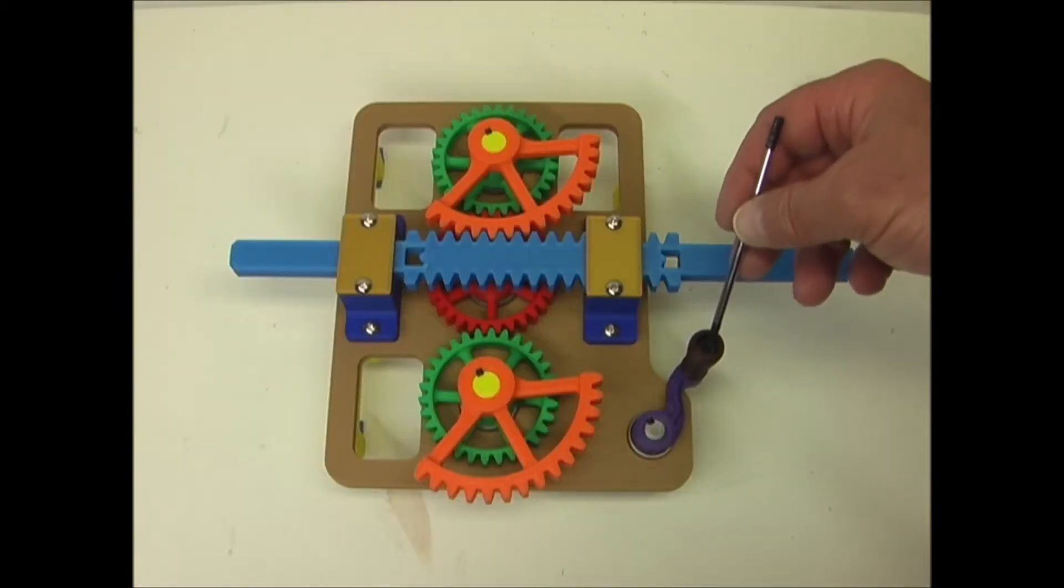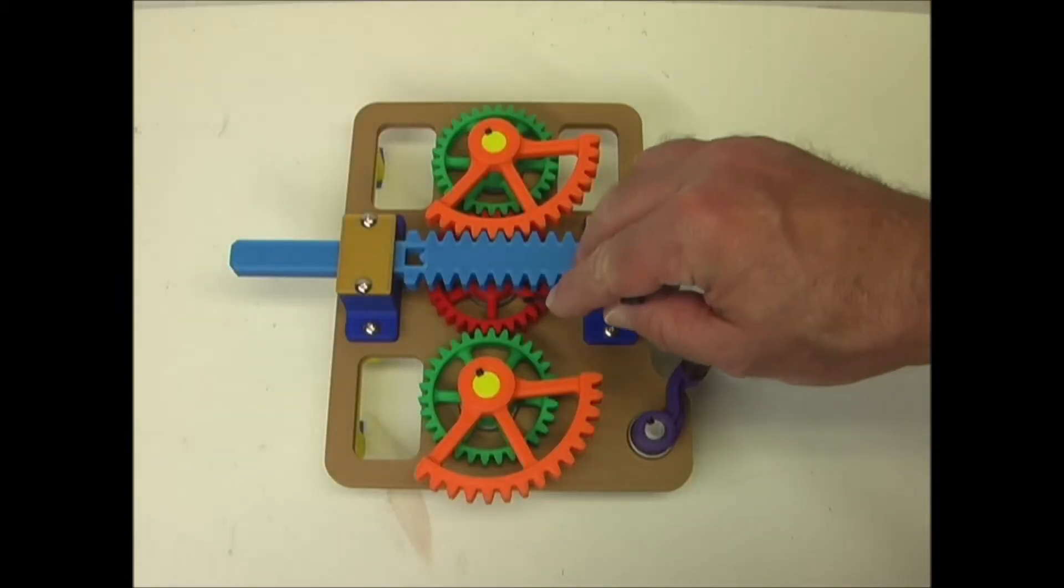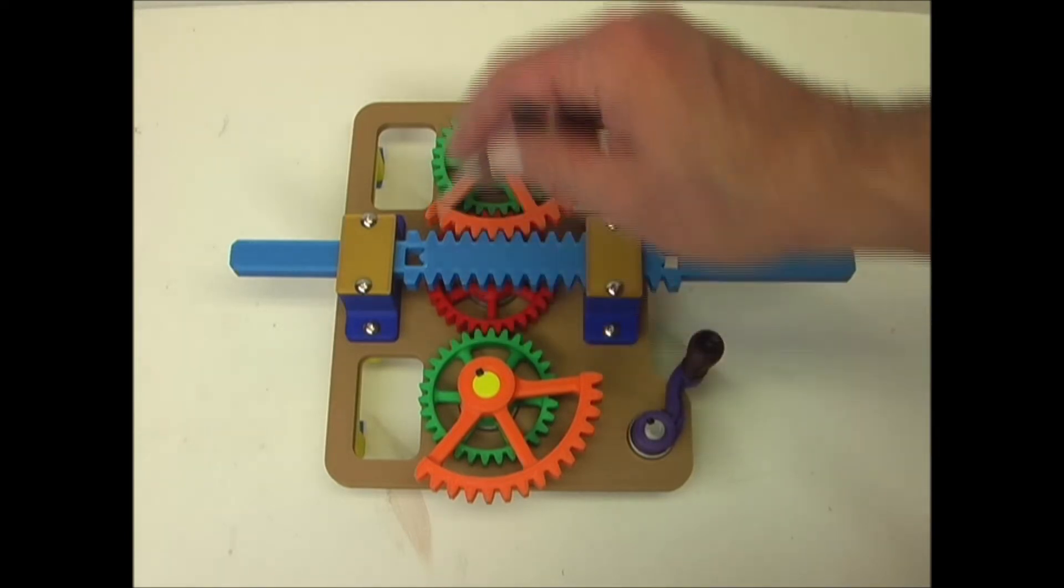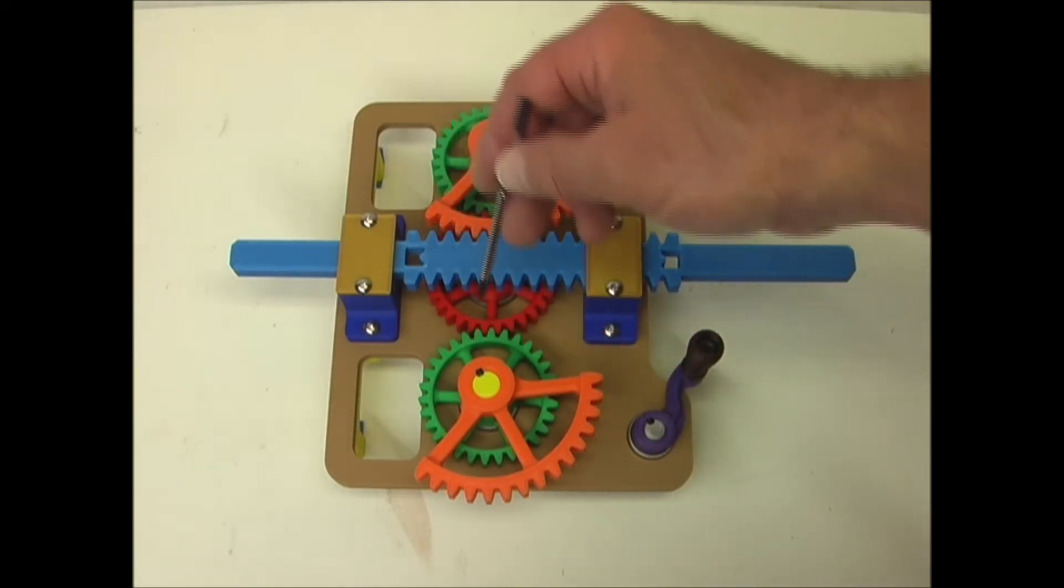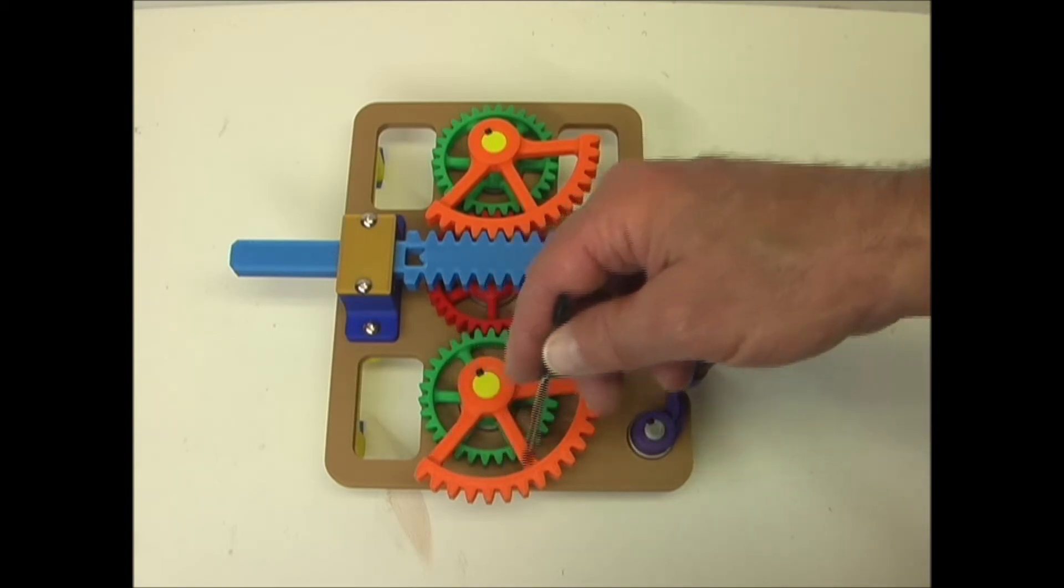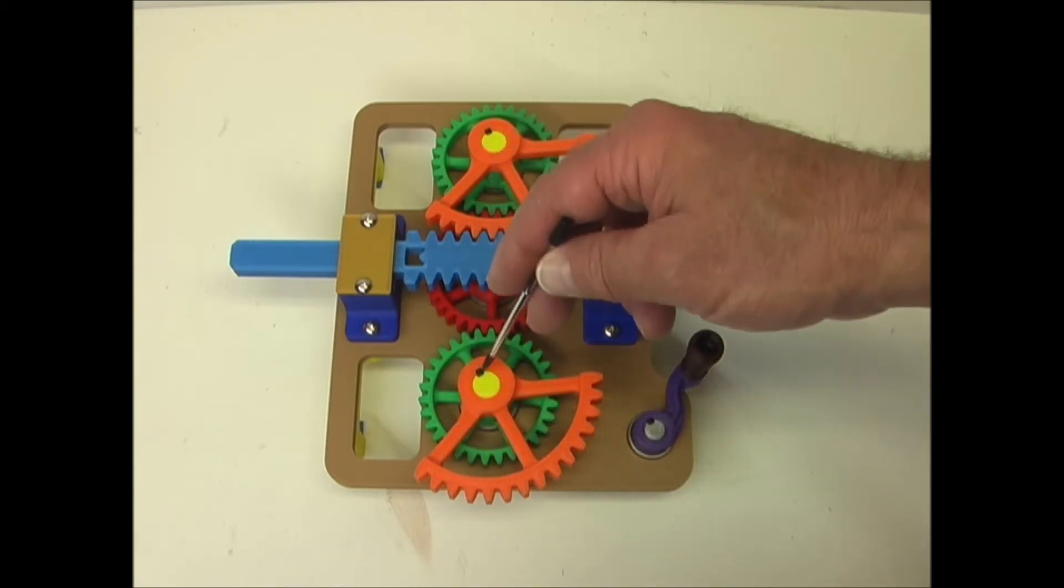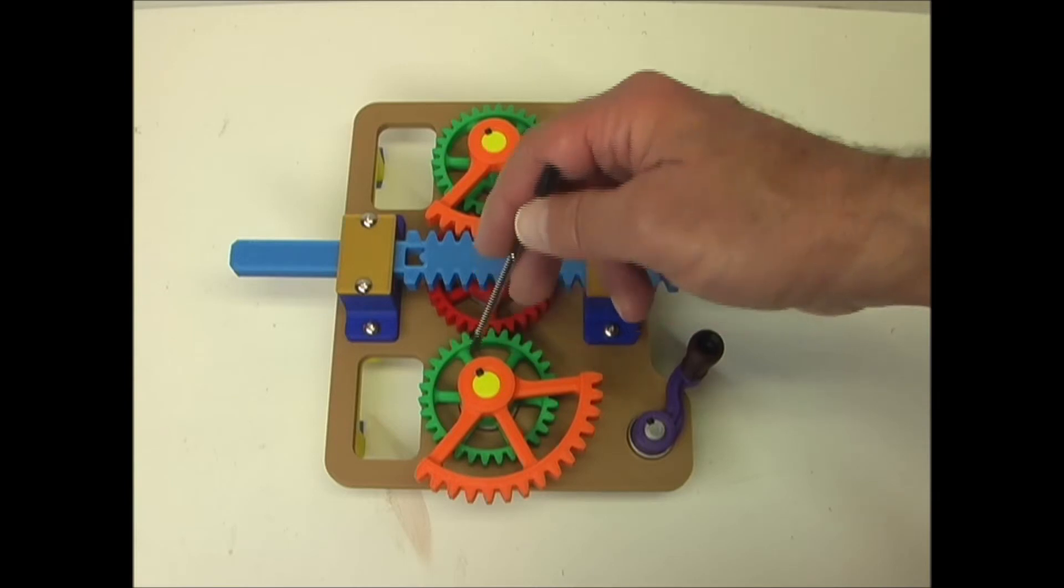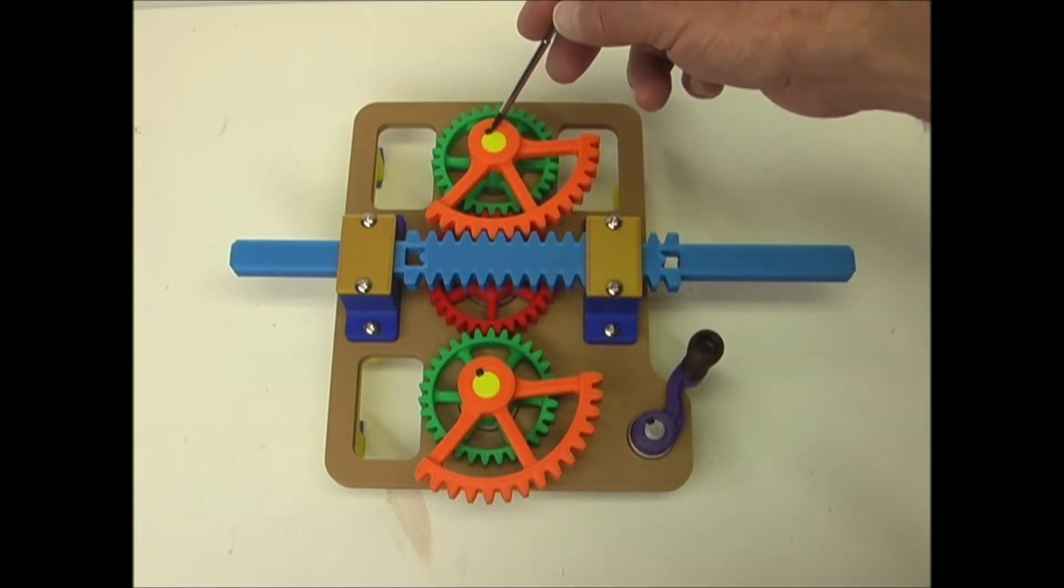So when I turn this crank, it turns this red gear, which turns these two green gears. On top of them are these orange pinions, and they are keyed to the shaft along with the green gears, so that the timing is always correct.